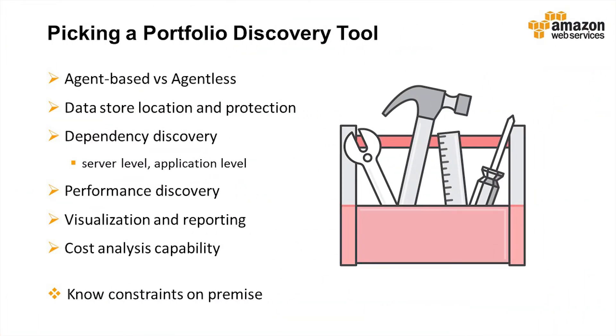How can we pick the right tools for portfolio discovery and analysis? Here are a few factors to consider when picking a tool. Agent-based and agent-less are perhaps the most commonly described implementation mechanisms. Agent-based discovery refers to having agent software installed on the machines or hosts that require discovery. Having an agent on the machines may give you more insights into the data; on the other hand, the agent software needs to be installed and maintained, which takes time and resources.